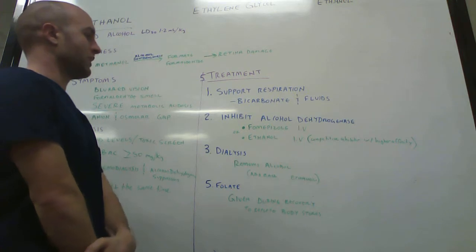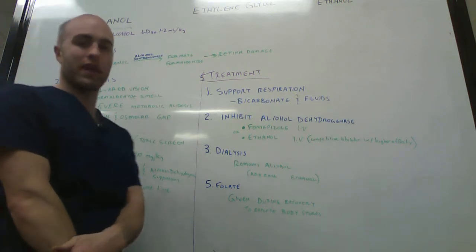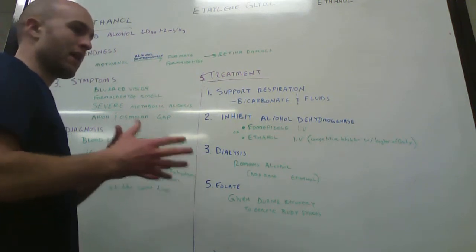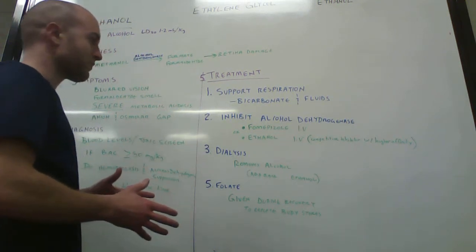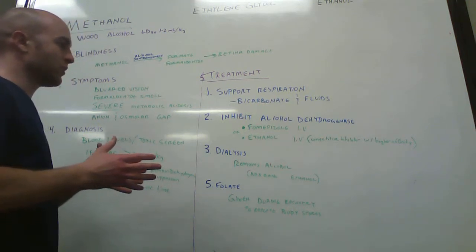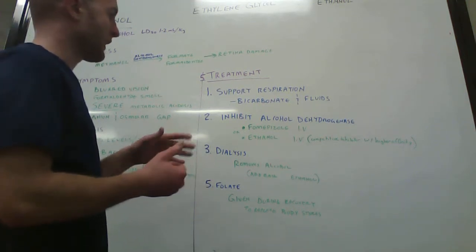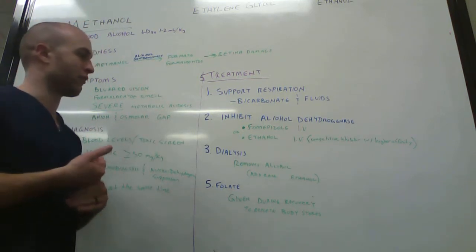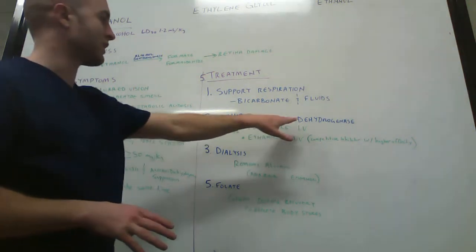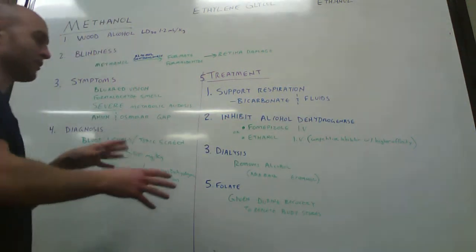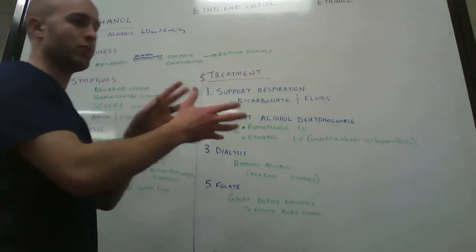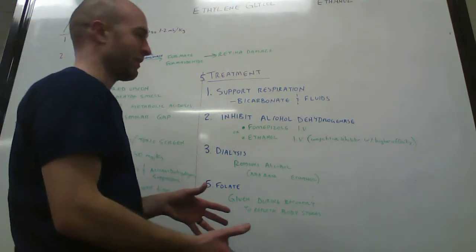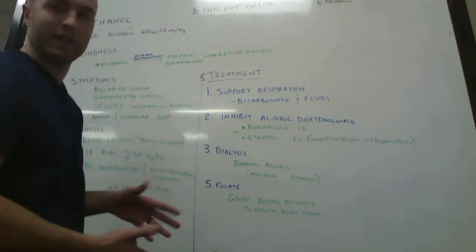The next thing that you want to do is inhibit the alcohol dehydrogenase. Remember, it's the alcohol dehydrogenase that is converting the methanol into formaldehyde. To inhibit this, you're going to want to give them something called fomepazole via the IV. The fomepazole will inhibit the alcohol dehydrogenase because it's the alcohol dehydrogenase that is changing the methanol into formaldehyde. If you stop this, there's going to be less formaldehyde and formate, which means they're not going to go blind as quickly.